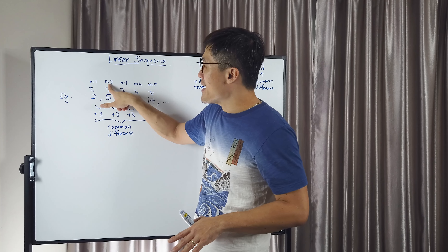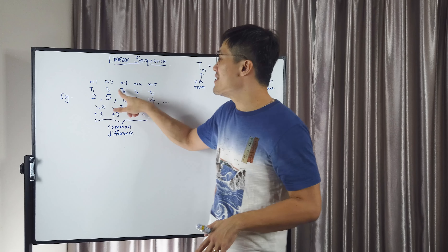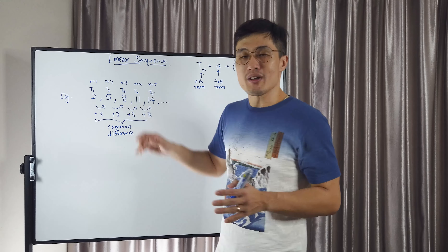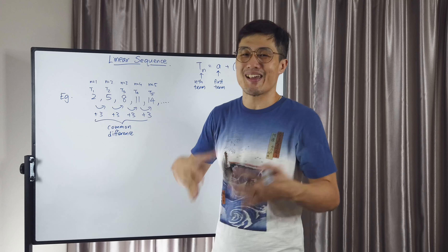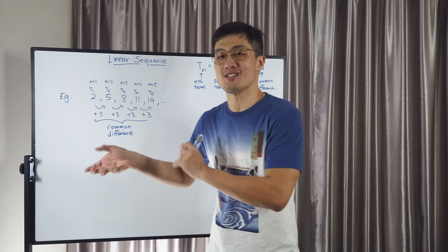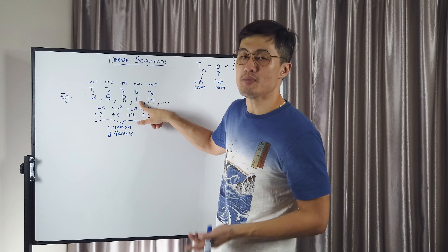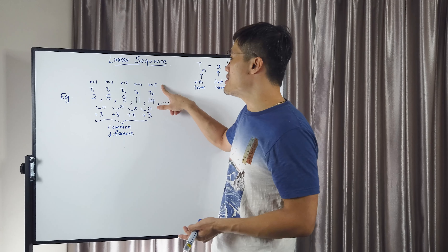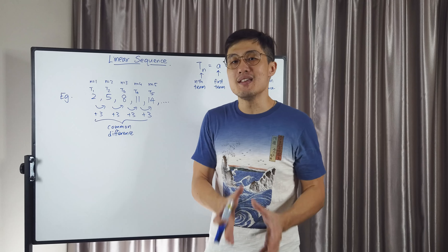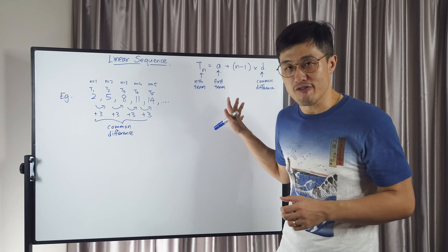Likewise, in the second position I have T2 and T2 equals five. Third position, T3 is eight. So you can think of n as a position, and the term as an object in that position — which is actually a number. So the fourth position, T4 happens to be 11. The fifth position, T5 happens to be 14. After we have understood this, we can now go into the formulation of the general form.